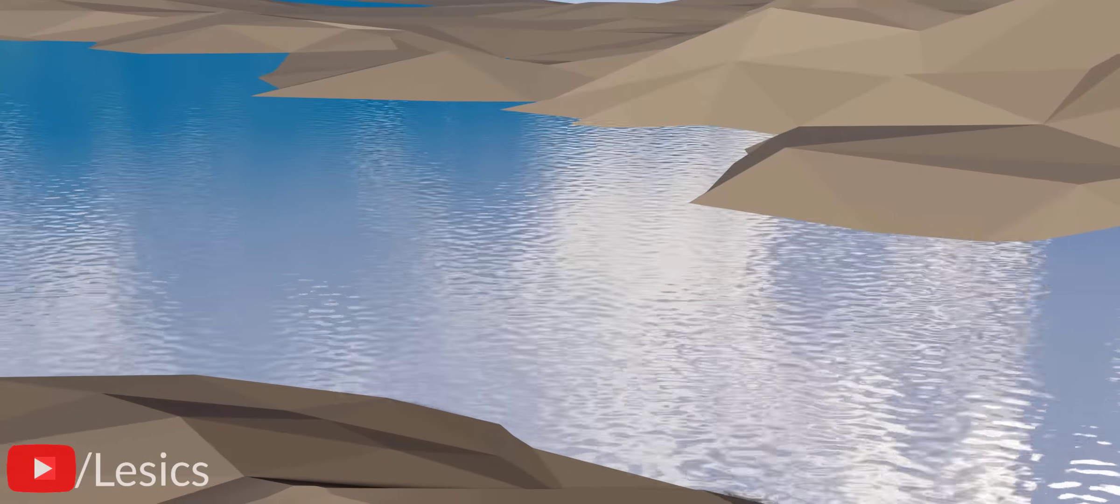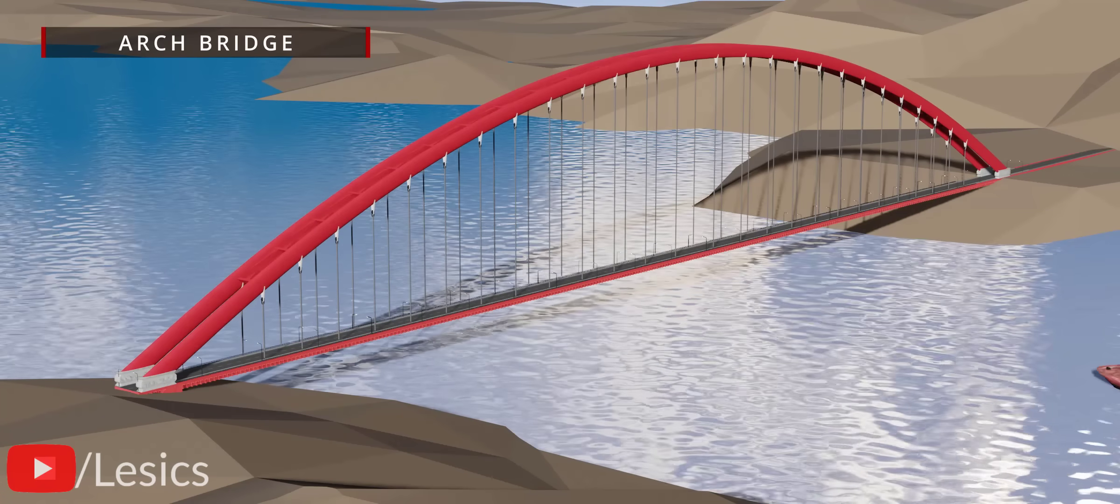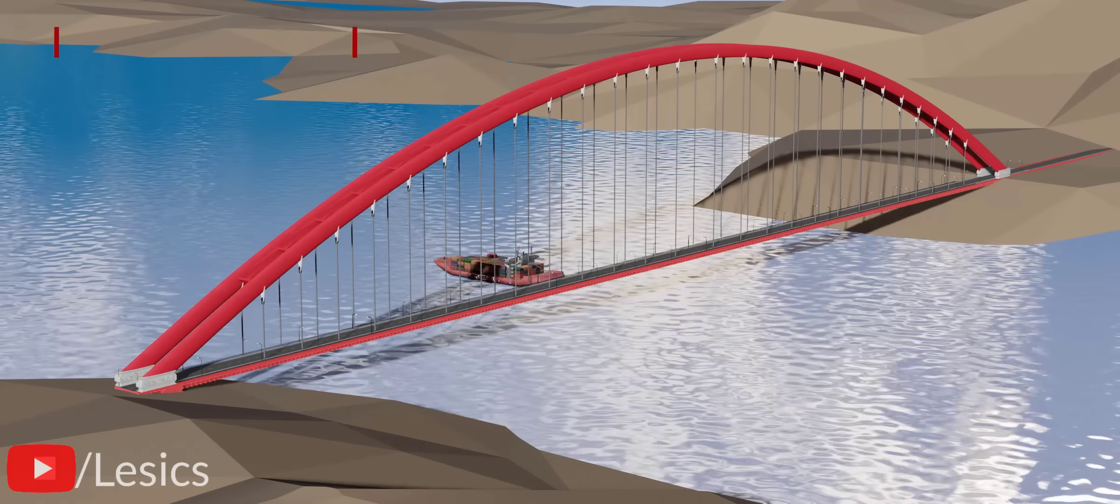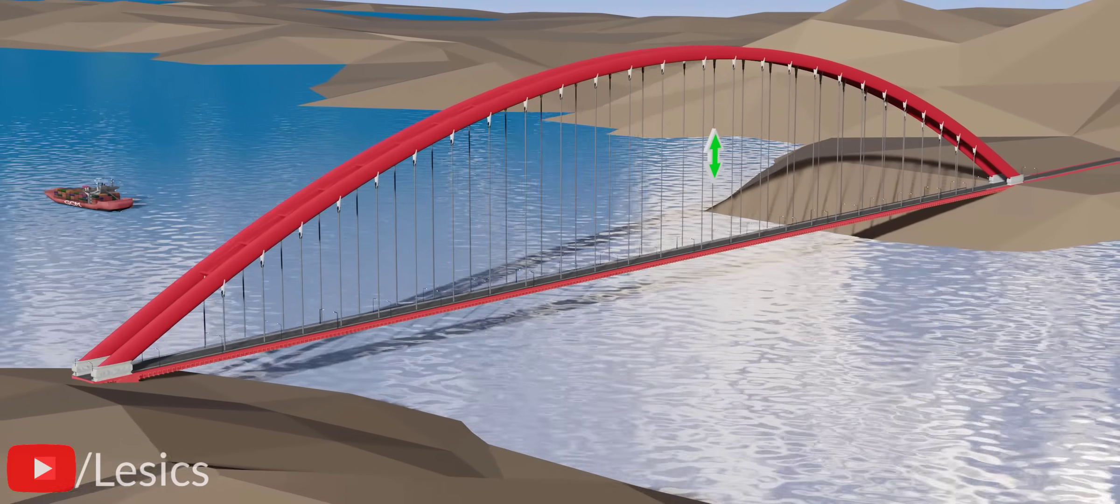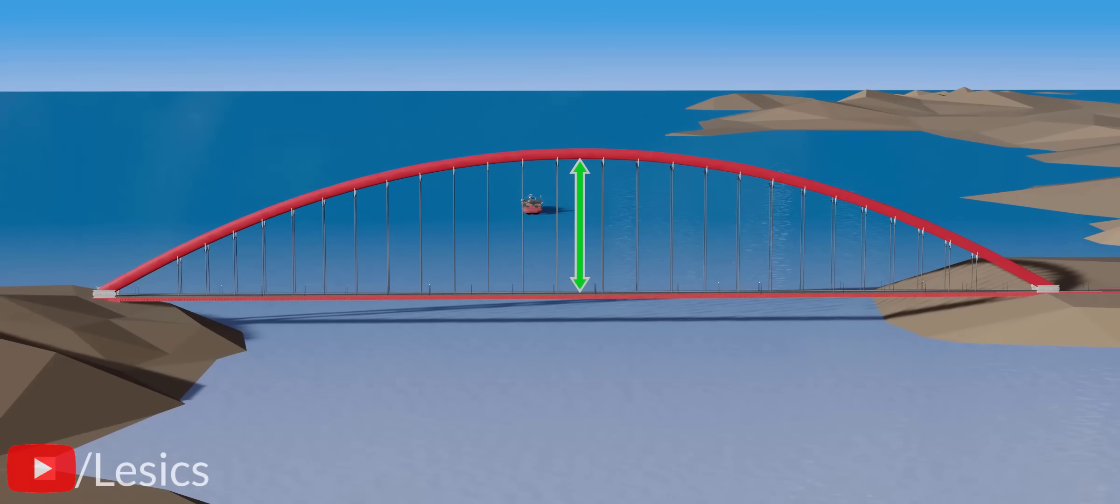Now, let's consider an arch bridge. This would definitely provide passageways for ships. However, to maintain the arch shape, the bridge would need to be extremely high. Such a structure would be quite complex to construct.